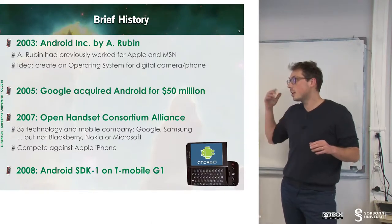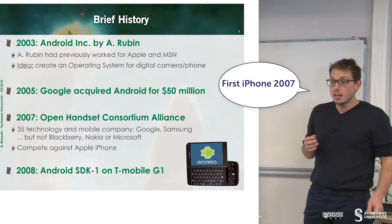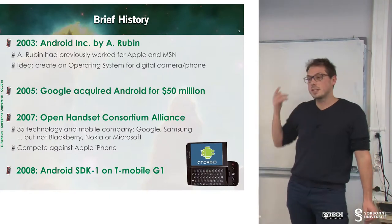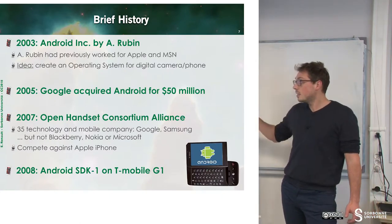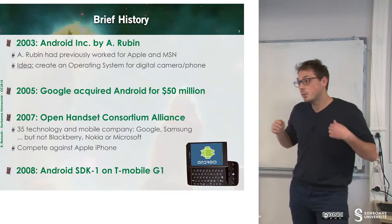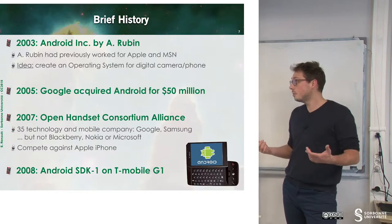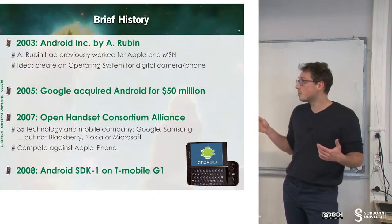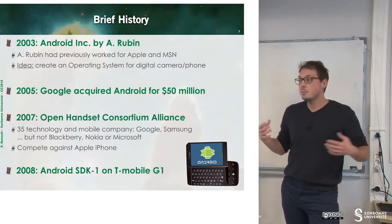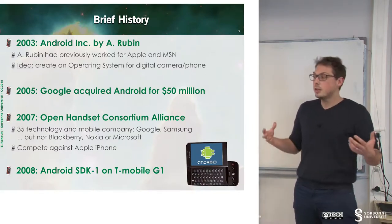In 2006, Apple decided to reveal the iPhone, and Google said they had to do something. Starting from this, they went back to the Android project and rebuilt it. To rebuild it, they decided to create a consortium — the Open Handset Alliance — and the idea was to mix all the big phone companies to create the operating system.